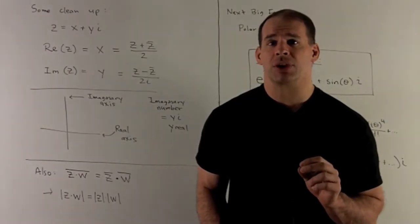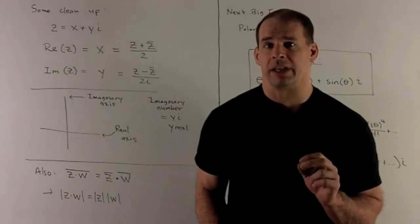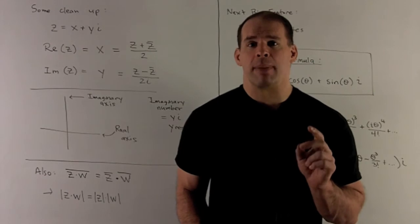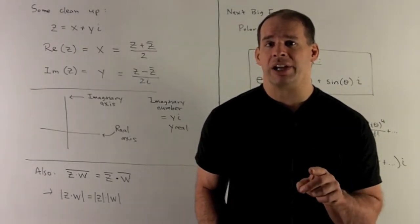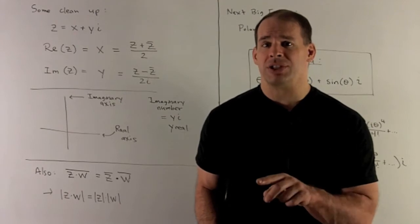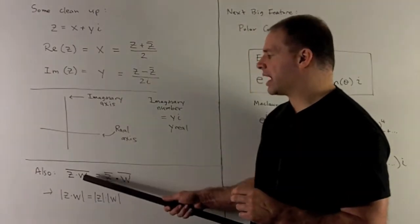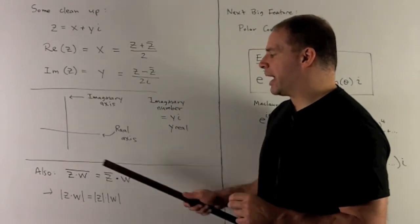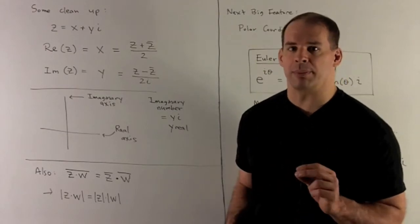So afterthoughts on complex conjugation and modulus. For both of these, we'll be multiplicative. That means it doesn't matter if we do a product, apply our operation, or apply the operations first, and then product. So for example, if I take z times w, take the conjugate, get the same answer as if I took the conjugates and then multiplied. So order doesn't matter.